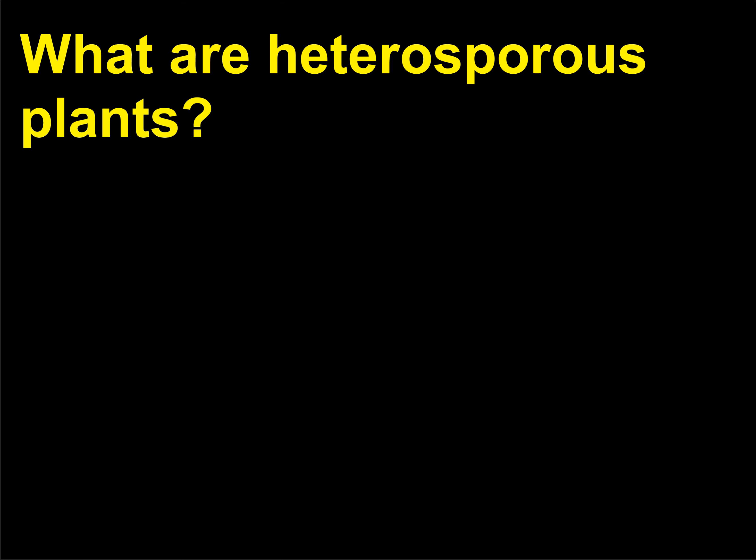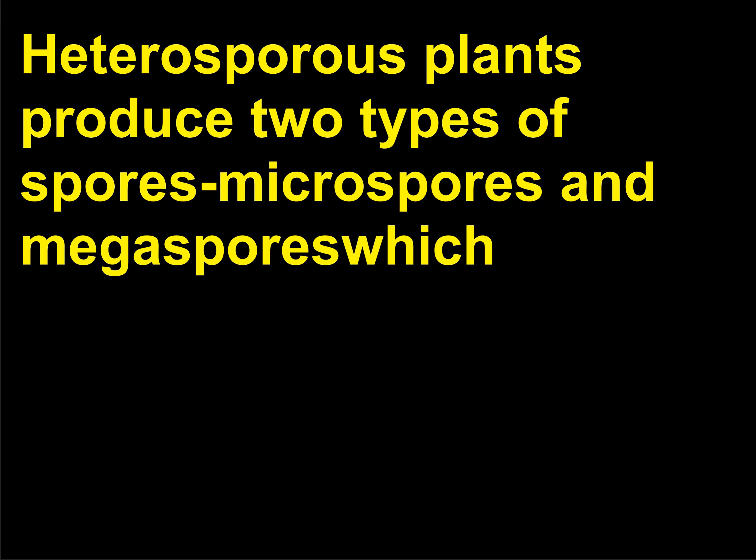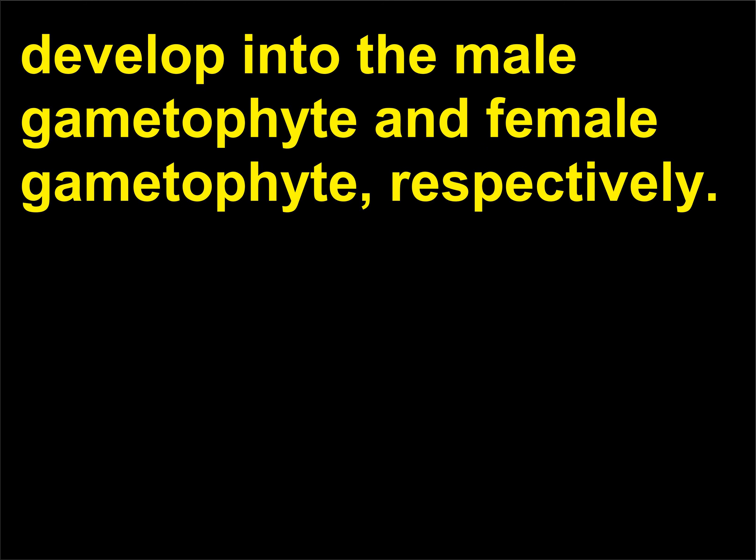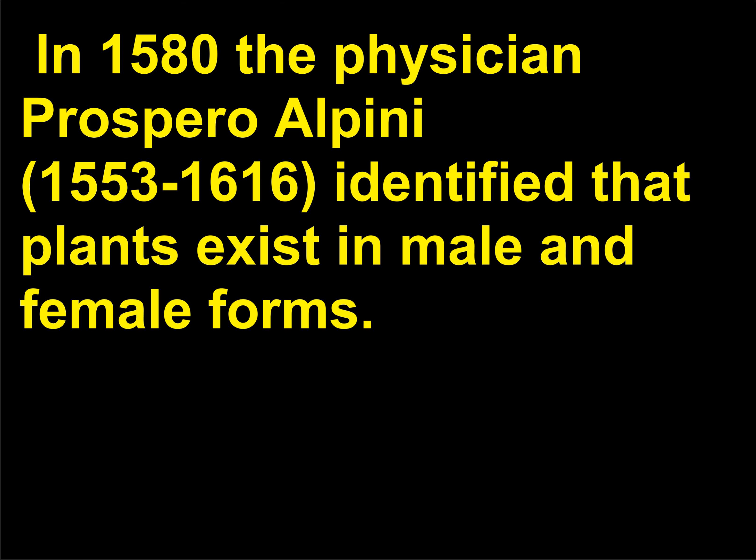What are heterosporous plants? Heterosporous plants produce two types of spores — microspores and megaspores — which develop into the male gametophyte and female gametophyte, respectively. In 1580 the physician Prospero Alpini, 1553 to 1616, identified that plants exist in male and female forms.